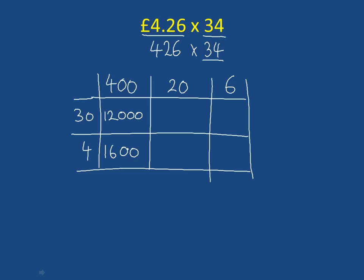30 times 20, well, we'll do 3 times 2 is 6 and we have 2 zeros. Underneath, 20 times 4, well, 2 times 4 is 8. Add on the zero. And now we do 6 times 30, well, 3 times 6 is 18 and we have 1 zero. And finally, 6 times 4 is 24 in the last box.